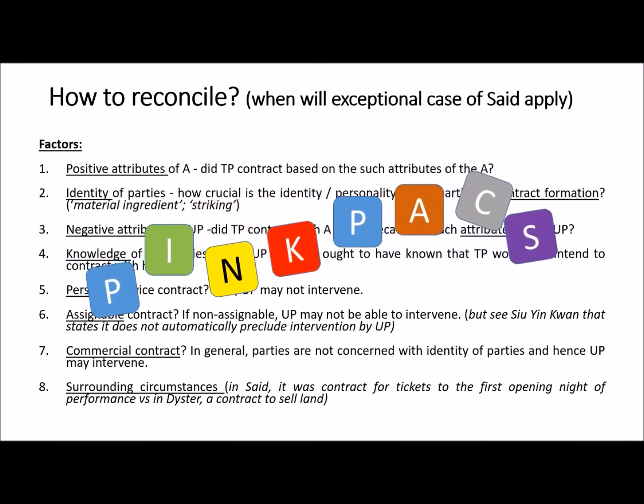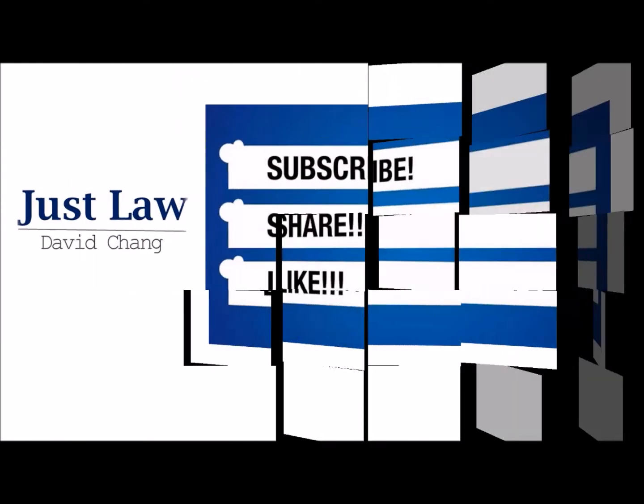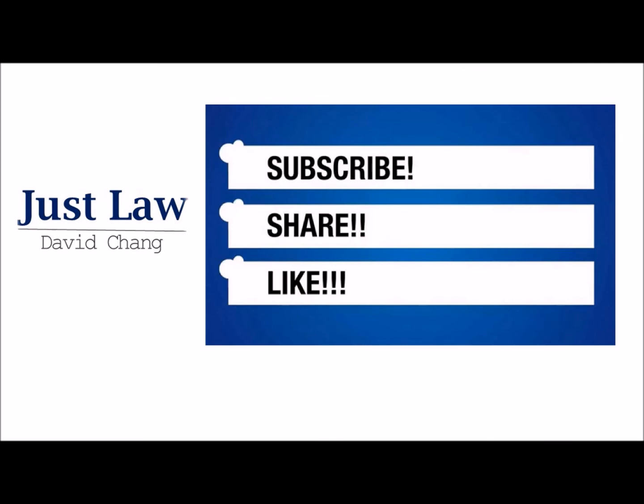There are eight PINK PASS factors to discuss in examination — P-I-N-K-P-A-S-S — to help argue and conclude whether the exceptional case of Sight and But applies. Take note that between the two cases, Sight and But is the exceptional case, applying only in exceptional circumstances. Otherwise, generally speaking, it will not apply. I hope you have enjoyed this lecture on the doctrine of undisclosed principal. Please feel free to subscribe, share, and like. Thank you.